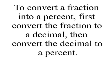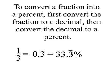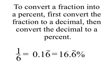To convert a fraction into a percent, first convert the fraction to a decimal, then convert the decimal to a percent. Here's one-third — we already know that's .3 repeating. We move the decimal point over two and we get 33.3 repeating percent, sometimes written as 33 and a third percent. Here's one-sixth — using a calculator, we get .16 repeating, which gives us 16.6 repeating percent, often written as 16 and two-thirds percent.